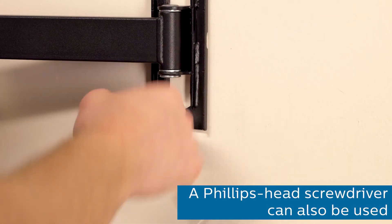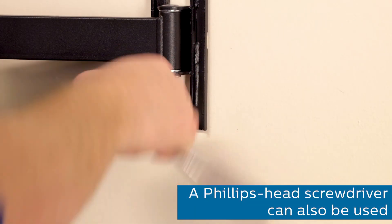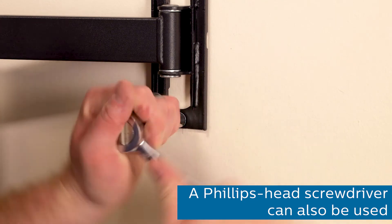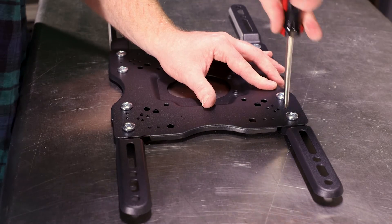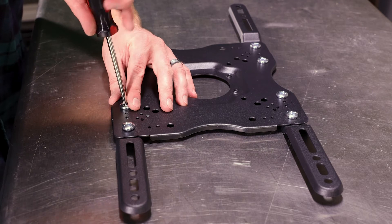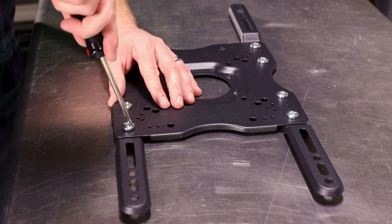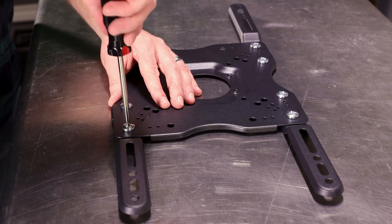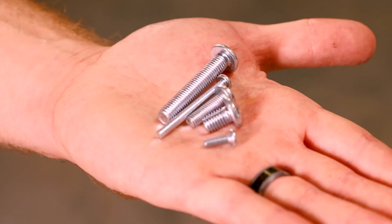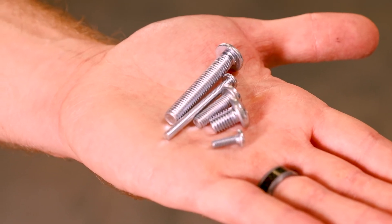Align the holes and secure the mount to the wall with Philips hex head screws and washers, making sure not to over-tighten. If the mounting holes are spaced more than 200mm by 200mm apart, you'll need to use included hardware to attach the adapters to each corner of the display plate. Multiple screw sizes are included to accommodate various TVs.